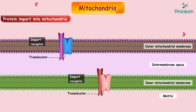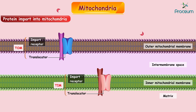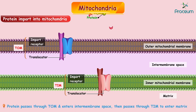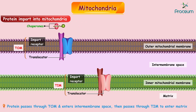Protein is imported into the mitochondria in two ways. There is TOM, the translocase of the outer membrane, and TIM, the translocase of the inner membrane. Both are import receptors and translocators. Protein passes through TOM and enters the intermembrane space, then passes through TIM to enter the matrix.